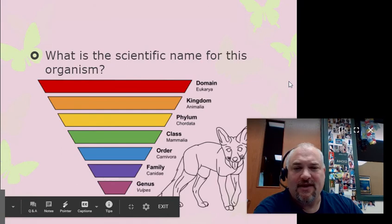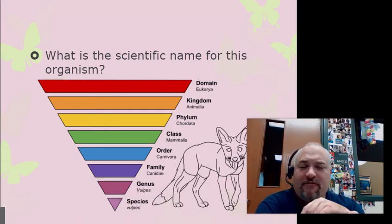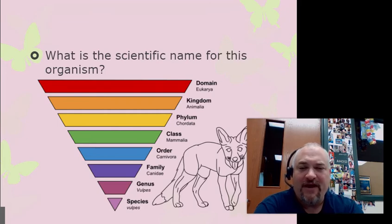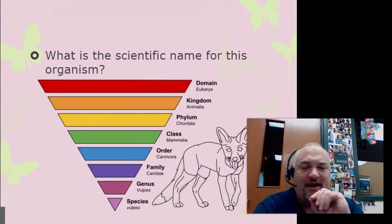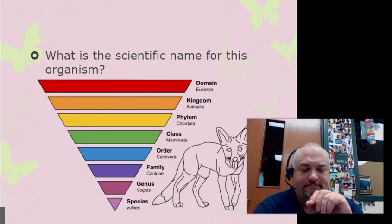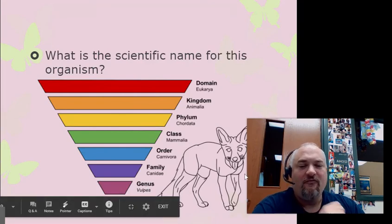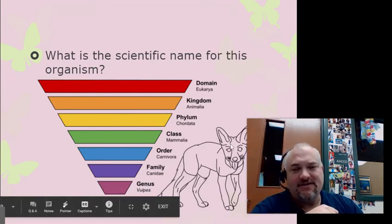Here we have all the taxon names that the fox belongs to: kingdom Animalia, phylum Chordata, class Mammalia, order Carnivora, family Canidae, genus Vulpes, species vulpes. Take a minute and think of the scientific name for the fox. Did you get it right? Remember, you always put the genus and the species name together — so it's Vulpes vulpes, the scientific name for the fox.